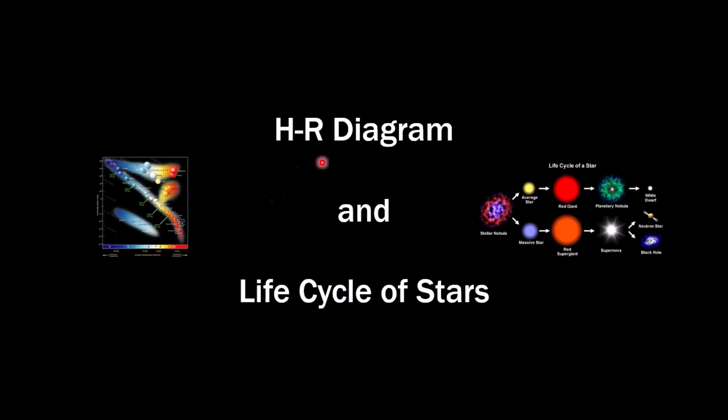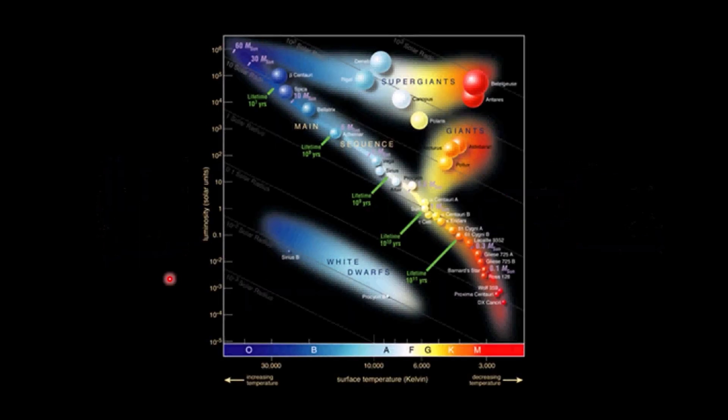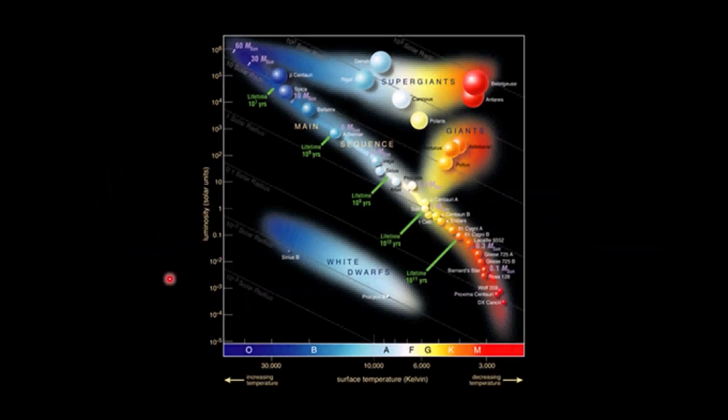After that show, we were then going to go into these two topics, the HR diagram and the life cycle of stars. Now, the HR diagram is the most important diagram probably in astronomy. You guys are probably aware of the periodic table for chemistry. Well, this is the periodic table for astronomers. This graphs stars, and based on the position on the graph, tells us a lot of information.